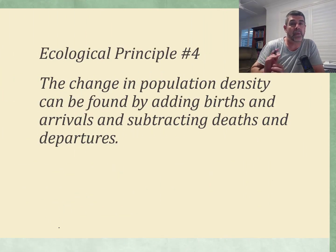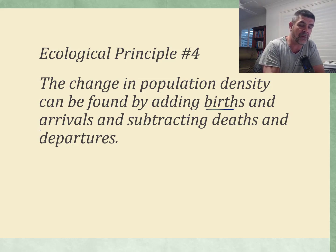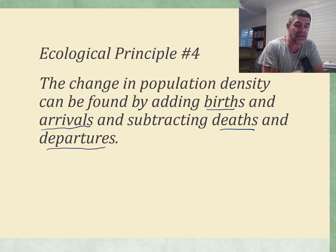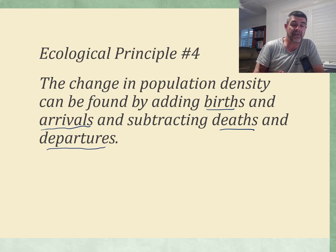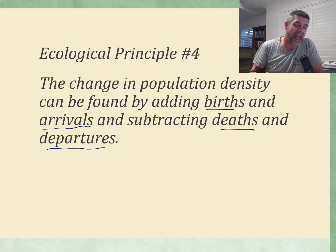When looking specifically at distribution and abundance, we need to remember that the change in population density is basically found by adding births and arrivals, also known as immigrants, and subtracting deaths and departures, also called emigrants. So anything moving into the area from another area would be regarded as an immigrant and would add to the numbers, while anything leaving would be regarded as an emigrant and would subtract from our overall population density.